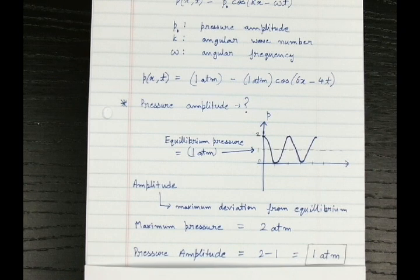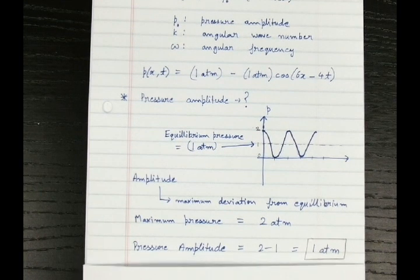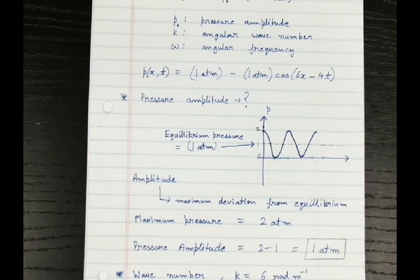So now what is the wave number of our equation? Wave number is given by k and if you see for our equation, k is equal to 6. So the wave number is simply 6 radians per meter. So we have the amplitude and wave number for our equation.